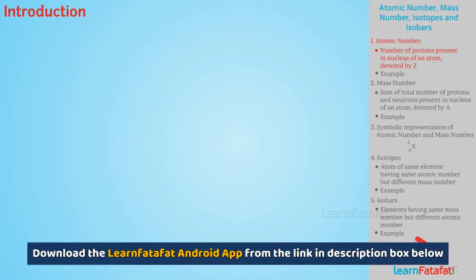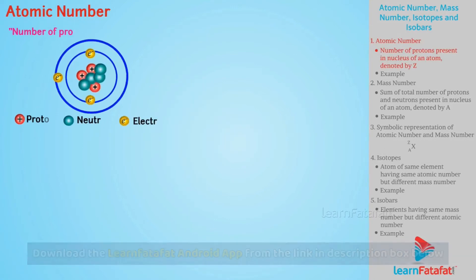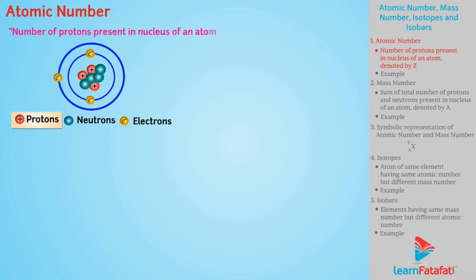First, we will learn Atomic Number. It is the number of protons present in nucleus of an atom, denoted by capital Z.